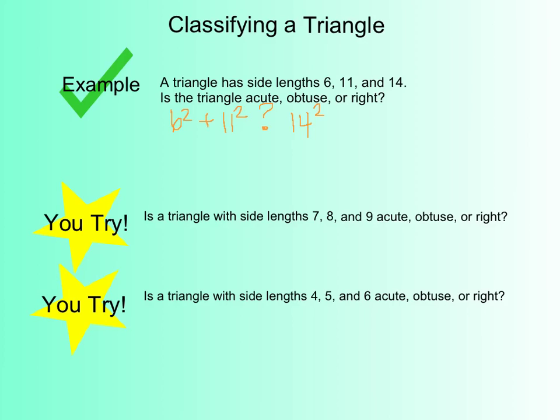I know in my head 6 squared is 36, and I know 11 squared is 121. 14 squared might be a little bit harder for some of you to have memorized, but I know that 14 squared is 196. So let's do this. Let's add our 121 and our 36. We get 157. How does 157 compare to 196?